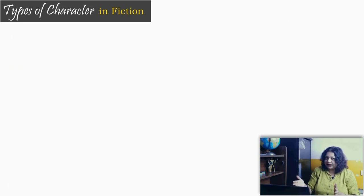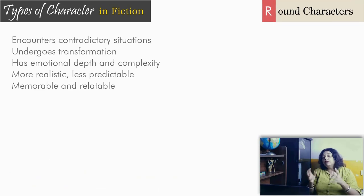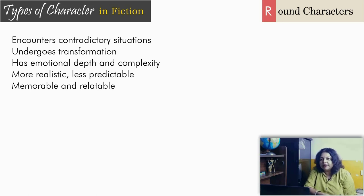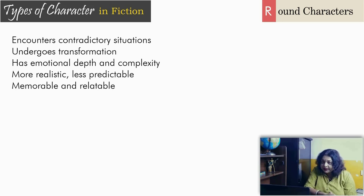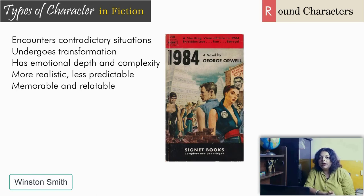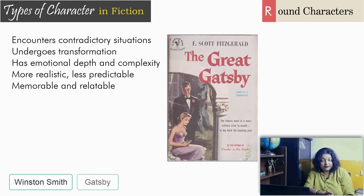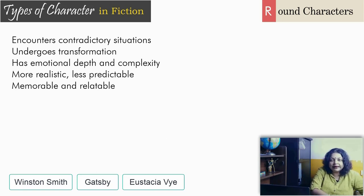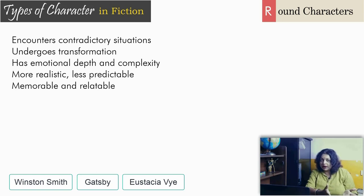When that stepmother becomes something different from the usual stock presentation, she becomes a round character. Round characters are those which go against our idea of a character — they have multiple dimensions and are simply very attractive. The way they are presented creates curiosity in us, as if we are exploring the character as the narrative progresses. Round characters have emotional depth and complexity; they are memorable and relatable. Think about Winston Smith in 1984, Gatsby in The Great Gatsby, Eustacia Vye — she is the roundest character with all complexities possible in the Victorian era.